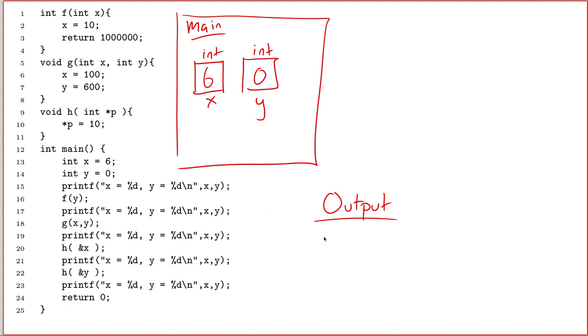So line number 15, we generate our first line of output. We're inside the scope of main. We print out x equals, well, x in this case is 6, and y equals 0.